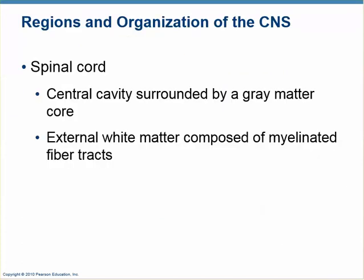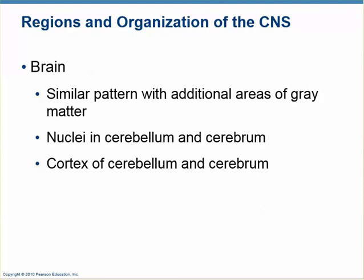The spinal cord is found running up and down the vertebral foramen, so it's found surrounded by bone, by vertebrae. It's a hollow cord with a central cavity. The gray matter — the integrated part — is found in the center. And then the white matter, the tracks, are found around the outside. The white matter is myelinated; the gray matter is not myelinated. The brain has gray matter on the outside, and it is hollow and filled with fluid.